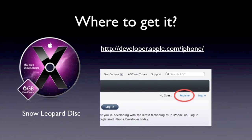Now where to get these programs? You can get them two places. If you have the Snow Leopard disk, they now bundle these on the Apple Mac operating system. Or you can go to developer.apple.com/iPhone and register for an account and download them from there. If you're going to be doing programming for the iPhone, you're going to need to register, so you may as well go ahead and register now. But don't sign up for the developer program unless you need to when you start uploading your apps to the App Store.